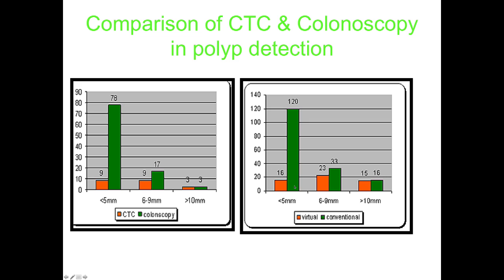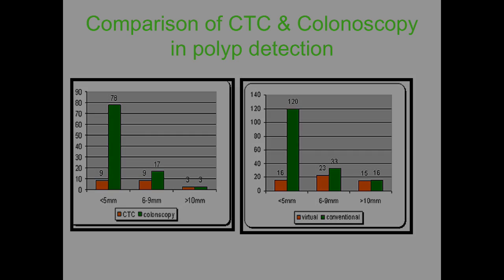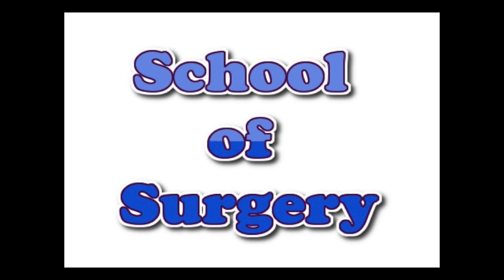Comparing 2D and 3D reporting approaches: the orange is 3D and the green is 2D. For smaller polyps less than 5mm, 2D is better, but for 6 to 9mm and greater than 10mm there's not much difference. It all depends how you report and how comfortable you are with either approach — you will be better with whichever you're trained in. Ultimately all radiology depends on the radiologist and their machine.